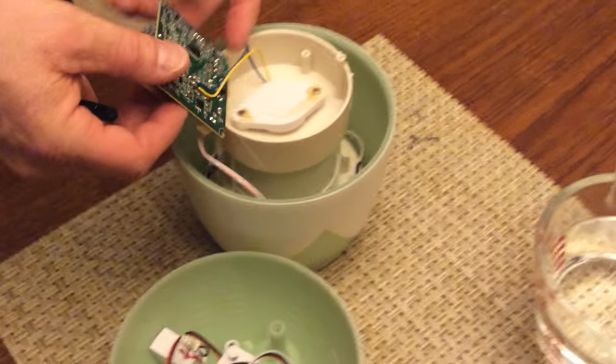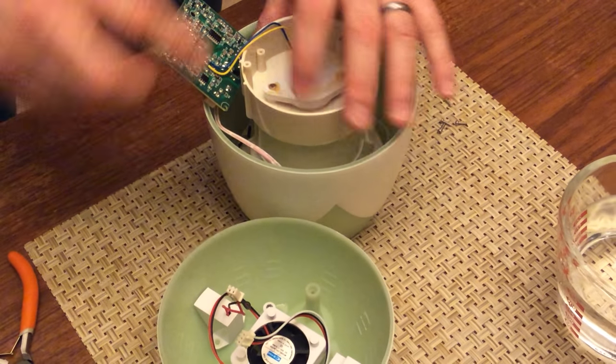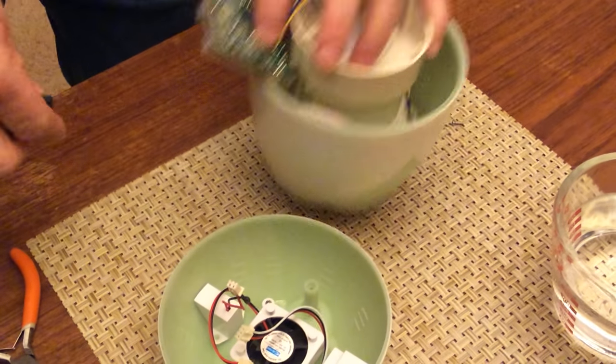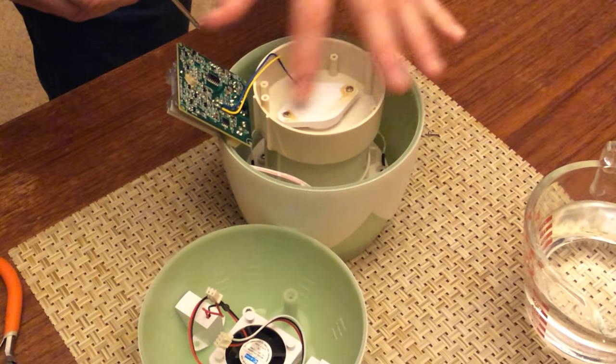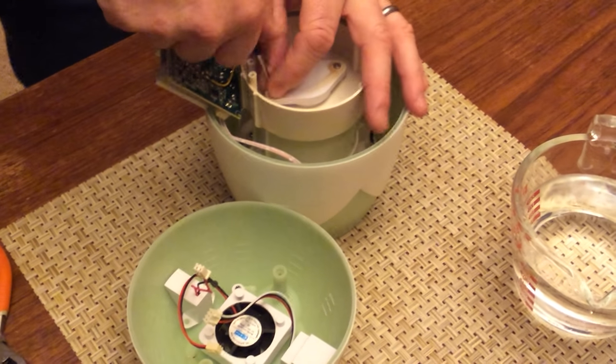Once we have the board exposed, we'll see that this plate covers the ceramic disc on the other side. What we'll need to do is remove these two screws to expose the disc so that we can replace it.